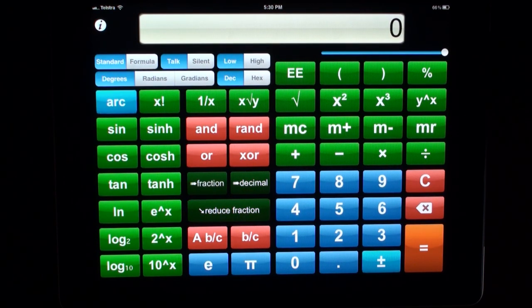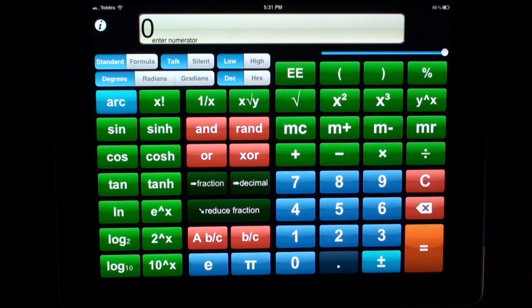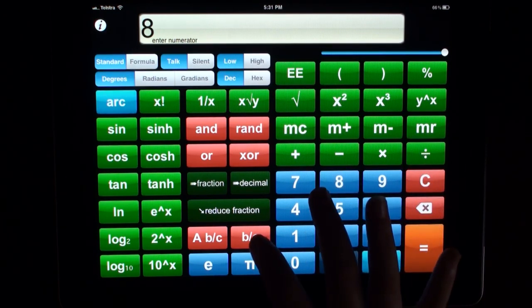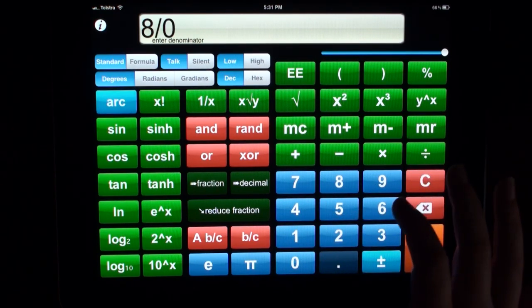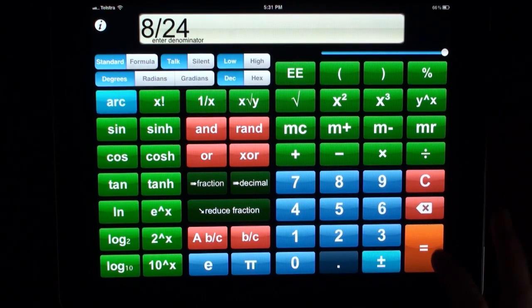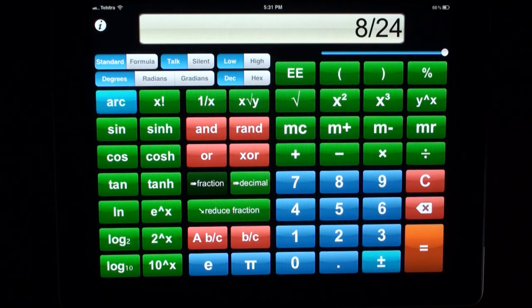We can also enter fractions directly. We do this by clicking on the ABC or BC button. Numerator. It's asking me to enter a numerator. Let's make our numerator 8. And our denominator. Denominator. 2, 4.